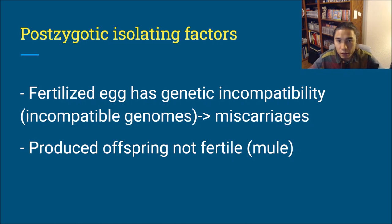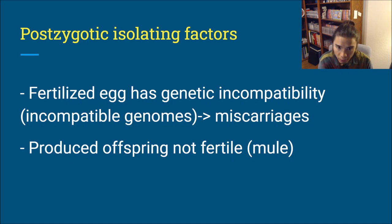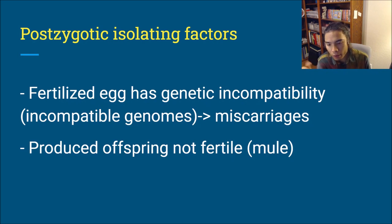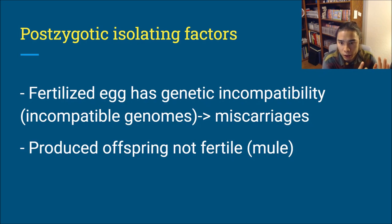There are two post-zygotic isolating factors. Post-zygotic implies the zygote has already been formed — the sperm did meet the egg and it was fertilized. The fertilized egg has genetic incompatibility; while the zygote was formed, eventually the body recognizes it is not viable and it is miscarried — it just does not come to term. From the perspective of the biological species concept, offspring must be fertile themselves. So if the produced offspring is not fertile, that is a post-zygotic isolating factor — like a mule, which is the product of the zygote but is not fertile.